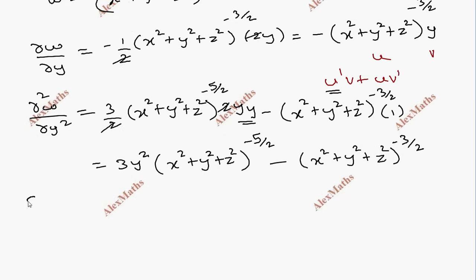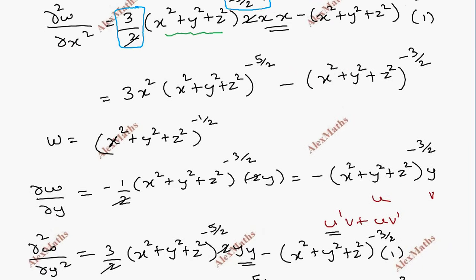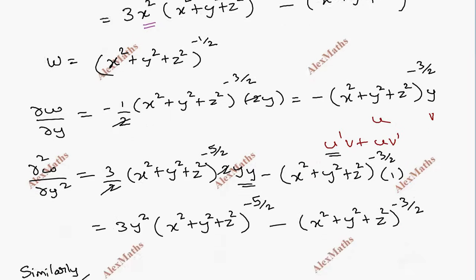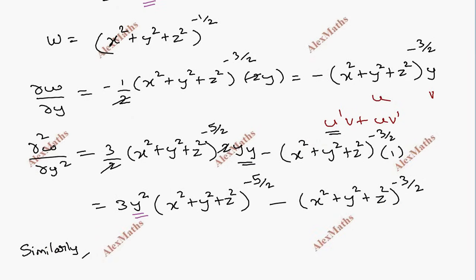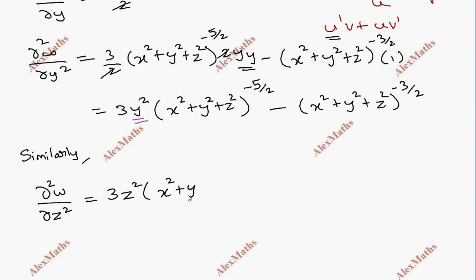Similarly, for the third term, ∂²w/∂z²: by the same method with respect to z, we get z² over the corresponding power. So ∂²w/∂z² equals 3z² into (x² + y² + z²) to the power minus 5 by 2, minus (x² + y² + z²) to the power minus 3 by 2.